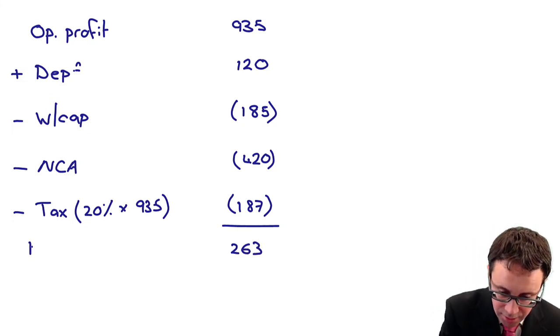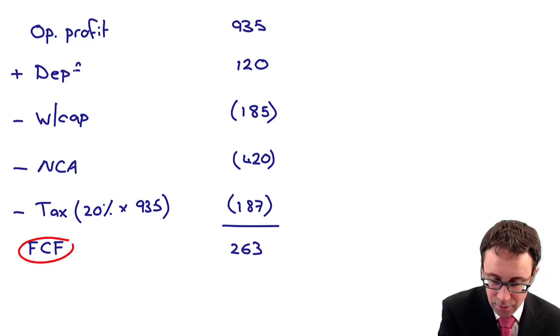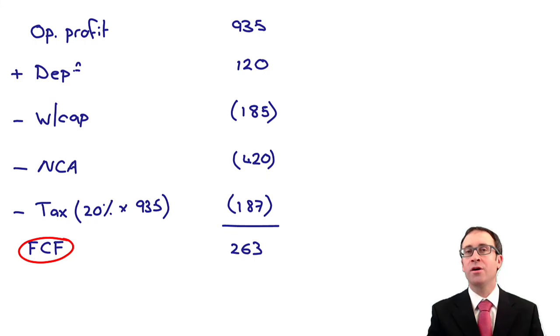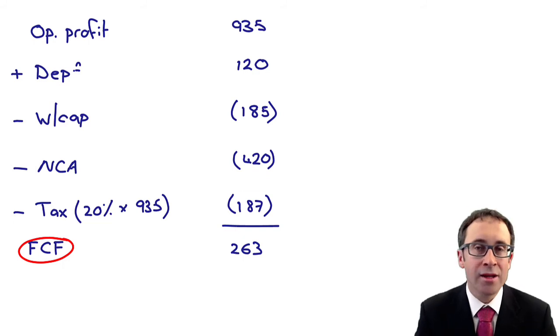That 263 is my free cash flow, FCF for short. So that free cash flow is the cash flow that is available to the debt holders and the equity holders. So effectively, before any interest or dividend payments.